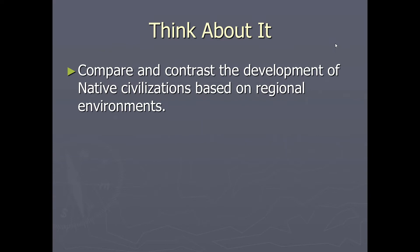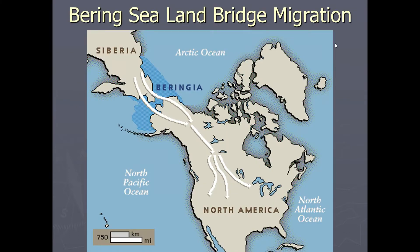One key thing to think about while going through this PowerPoint lecture is to compare and contrast the development of Native civilizations based on regional environments. As most of you have been taught, Native Americans came from Asia beginning as early as 30,000 years ago, crossing a land bridge that formed the Bering Strait during the Ice Age. The new immigrants were hunters and gatherers, and over 15,000 years various groups spread across the American continents.